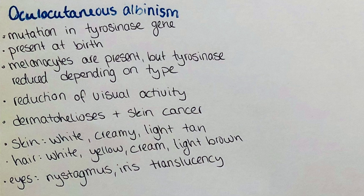Depending on the mutation, there can either be a complete lack of melanin where patients have white hair and skin, a little bit of melanin where patients have a creamy white skin color and yellow hair, or they might have very lightly tan skin and light brown hair. Patients also often experience ophthalmologic symptoms like nystagmus and iris translucency.